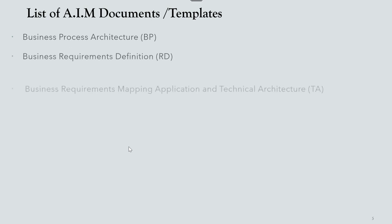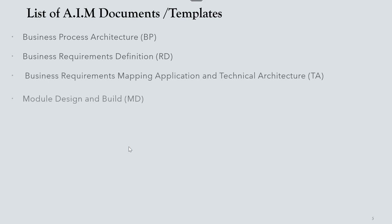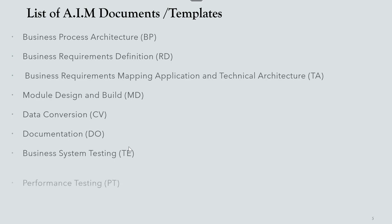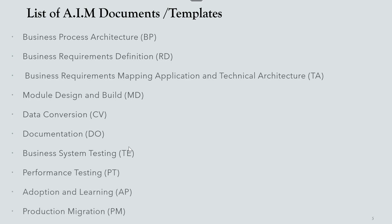So the full list of AIM documents includes: PP, RD, MD, CV, DO, TE, PT — Performance Testing to check the performance of testing — and Adoption and Learning, plus Production Migration, which is used to migrate from legacy or the testing environment before go-live to the production environment.